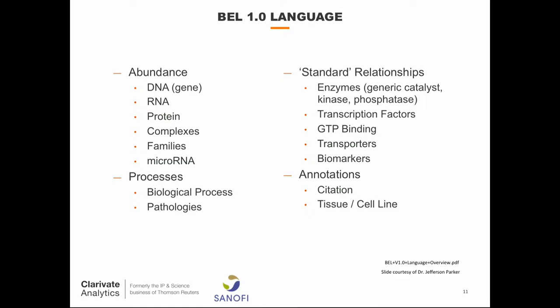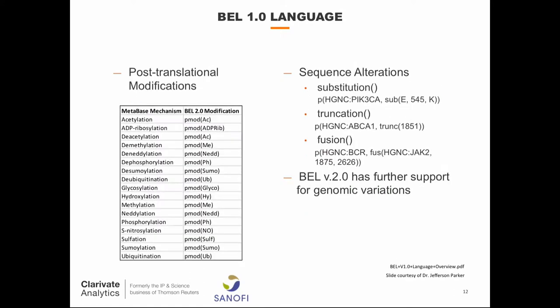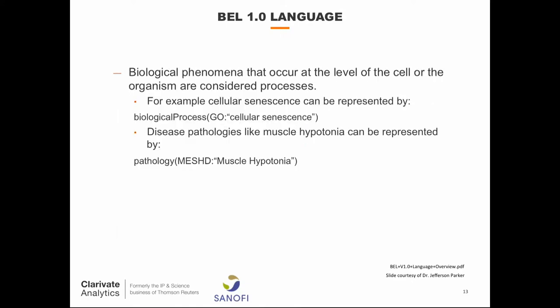Just highlighting a few things for software developers: it's easy to see that this pretty much summarizes what you need to know, and it's very handy for expressing rules. We say, okay, abundance — there are some types of abundances, a few types of processes, and a few types of annotation. That's it. That's how you structure your rules, plus a few additional features.